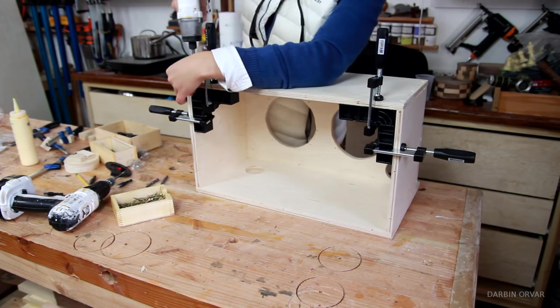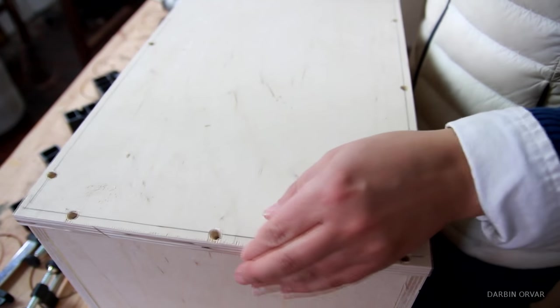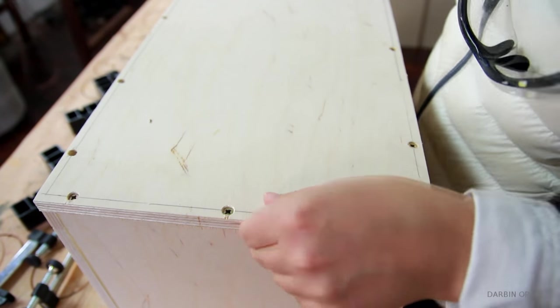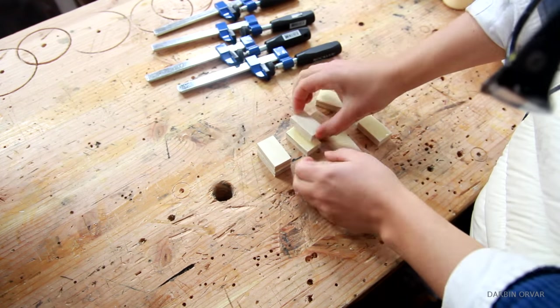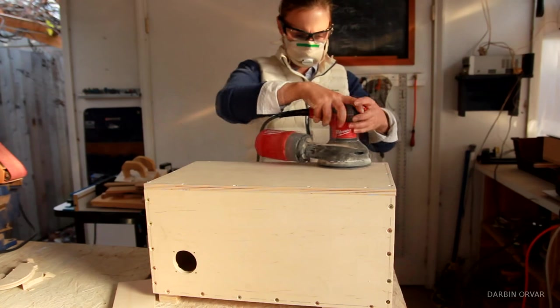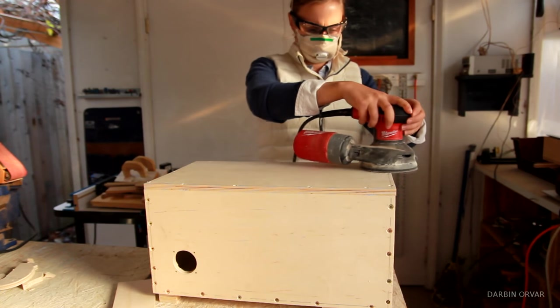I glued and screwed the side pieces in, and simply screwed down the top to close the box. The base box will be sitting on the floor, so I wanted to make some feet to get it off the ground a little bit. Then a little sanding to get all the edges nice and smooth.